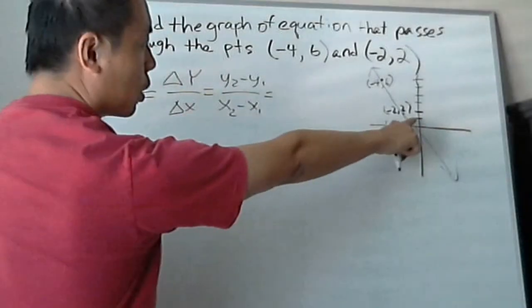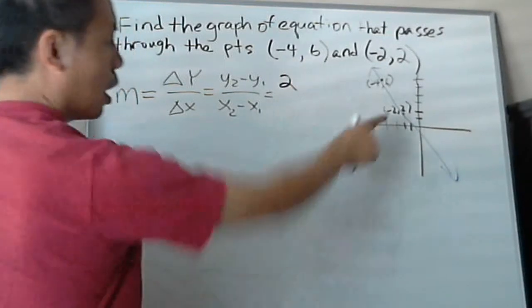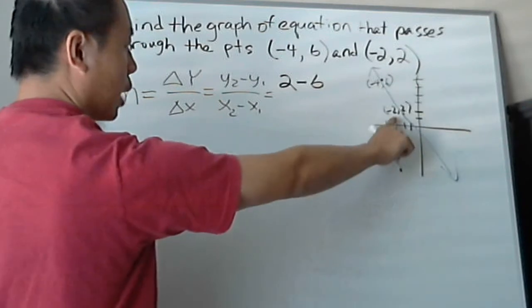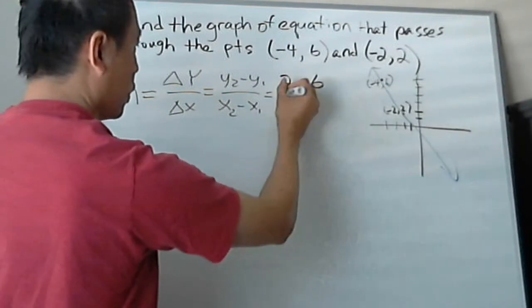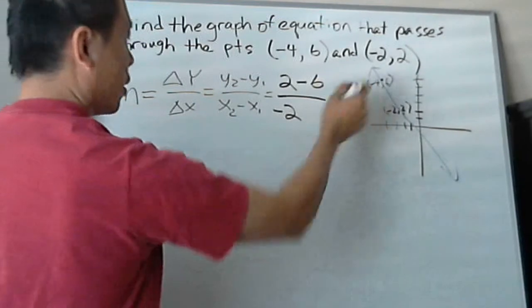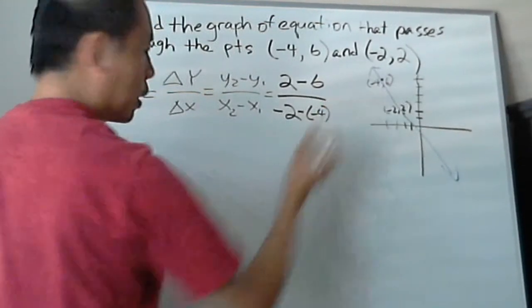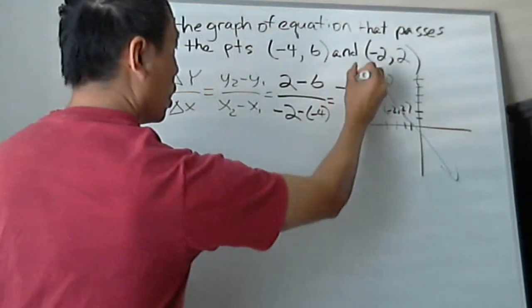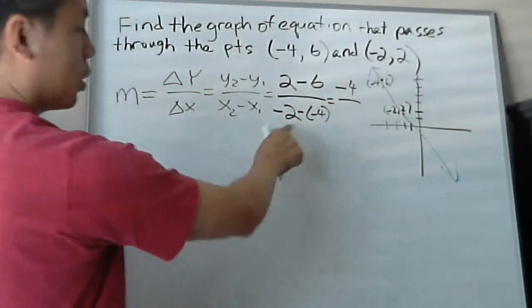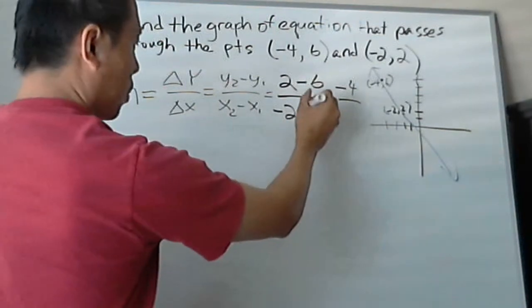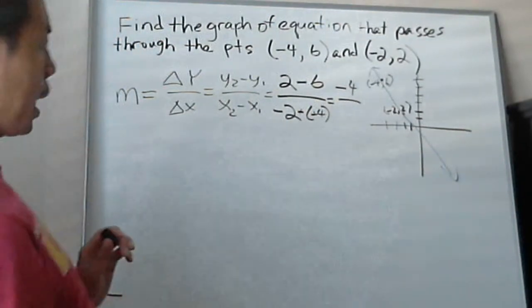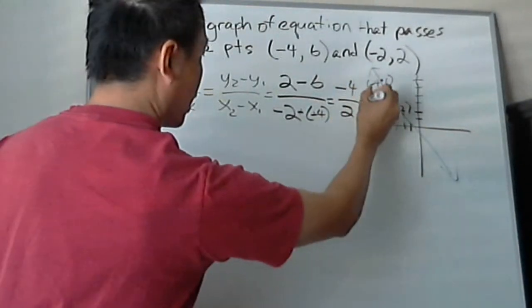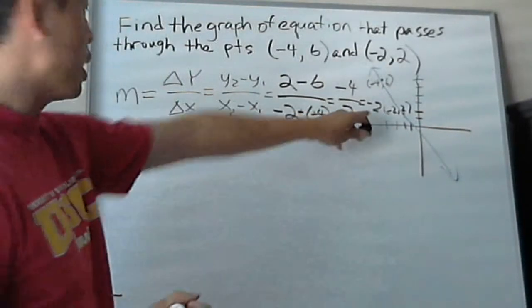And y2 for here, we'll use 2 minus 6, which is y1. And then we're going to go to x2 now, which will be negative 2, minus negative 4. So this will help me find the slope. 2 minus 6 will be negative 4. Negative 2 minus negative 4, so you get plus, right? So you'll get 2. And then negative 4, you can reduce that, so you'll just get negative 2. So now I know the slope is negative 2.